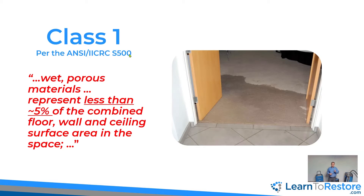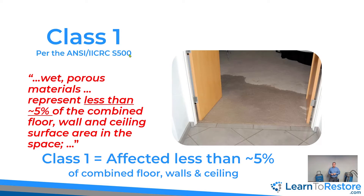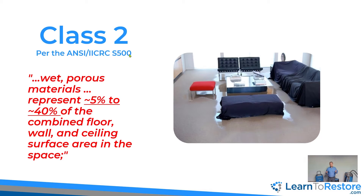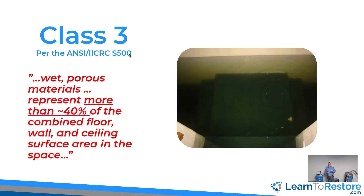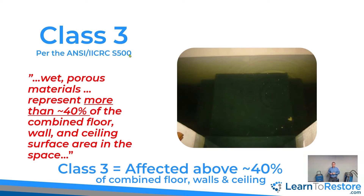We break our classes down into class one, two, three, and four. Class one, two, and three have to do with the percentage of what's wet in my space or my drying chamber. Class four has to do with the type of materials or assemblies that are affected. For class one, if less than about 5% of the total square footage of walls, floors, and ceiling is wet or affected by the water, that would be a class one loss — the least amount of water damage, therefore the least amount of evaporation and dehumidification needed. A class two is between 5 and 40% affected area — therefore more evaporation and more vapor to remove. Anything over 40% would be a class three: the greatest amount of wet affected materials, the greatest amount of evaporation, and the greatest amount of dehumidification needed.